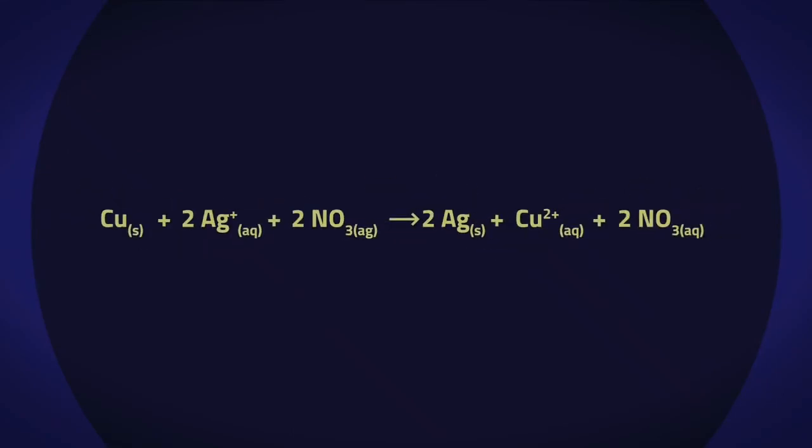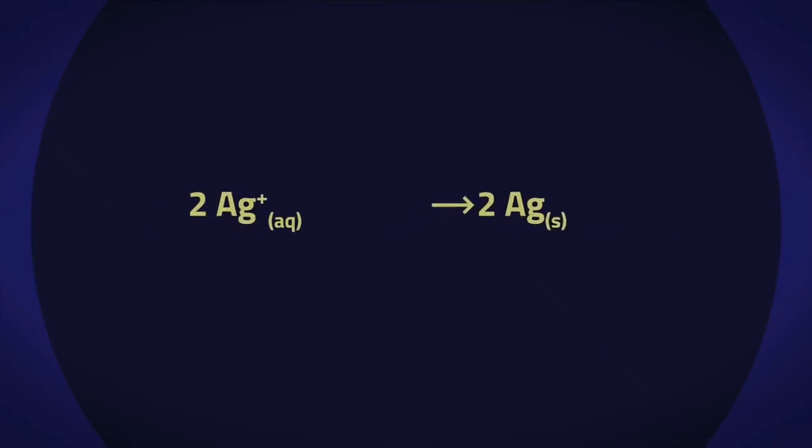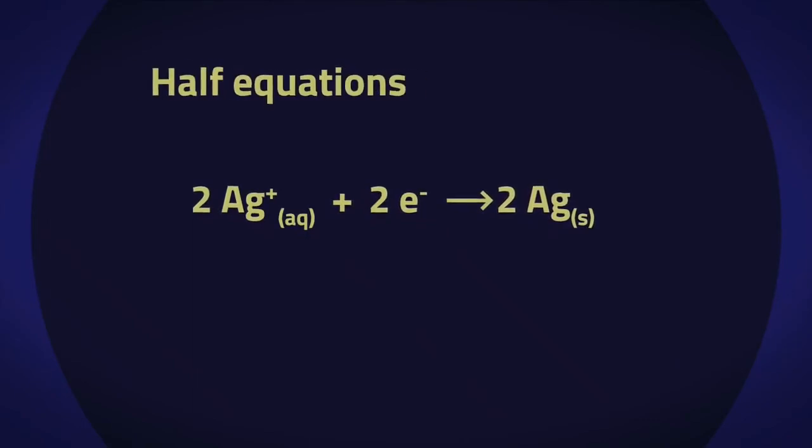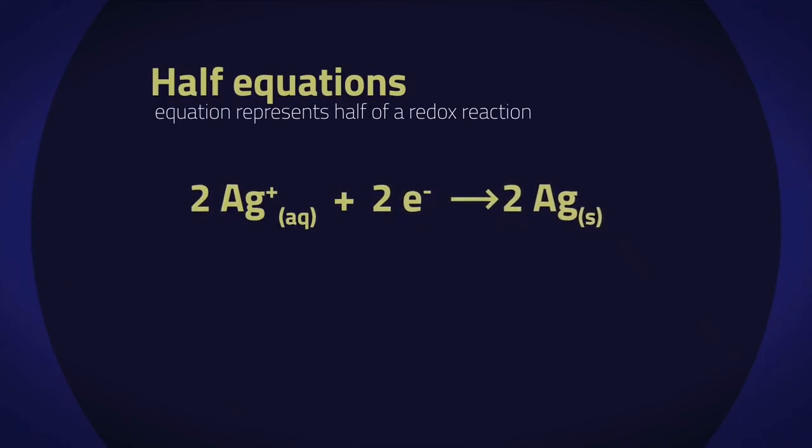Whereas the silver ions have gained electrons to become reduced, represented by this half-equation. They are called half-equations because each equation represents half a redox reaction, either the reduction reaction or the oxidation reaction.